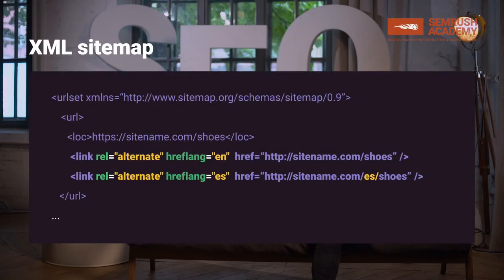You should also be aware that it's not only possible to specify hreflang in HTML — it can also be done more globally and at scale. Personally, I would prefer to create a dedicated XML sitemap, not only to feed URLs to Google but also to have one centralized location and a tool that is going to maintain and manage hreflang on a very global scale.